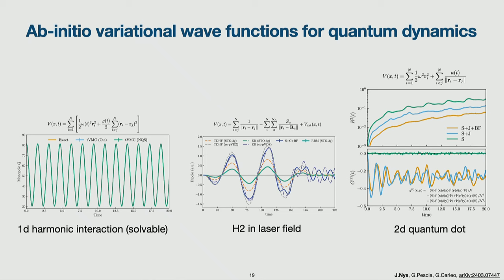For benchmarking, I take one-dimensional fermions in a harmonic well with harmonic interactions. Modulating the interaction produces a breathing-mode behavior — a monopole mode where fermions go in and out. The exact solution is shown in orange and the neural network quantum state result in green, and you see no difference. Up to long times, even for an interacting system, we can accurately reproduce the dynamics.